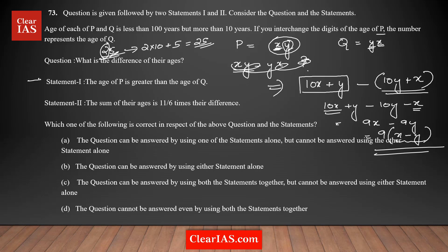Analyzing Statement 1 alone: it says P is greater than Q. This does not give any information about the difference between the digits x and y, so it is not sufficient to answer the question. Therefore, option B — which says the question can be answered using either statement alone — is eliminated.